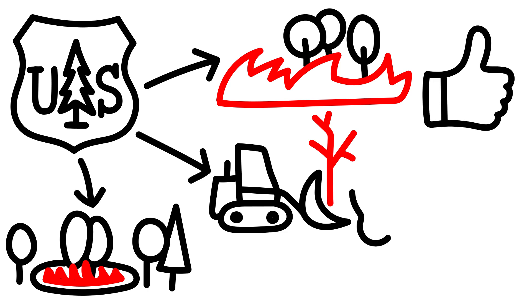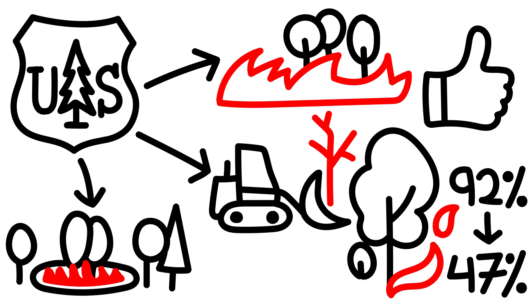This seems to be working. The loss of trees during wildfires dropped from 92% to 47% in areas which were recently thinned by cutting and controlled burns.